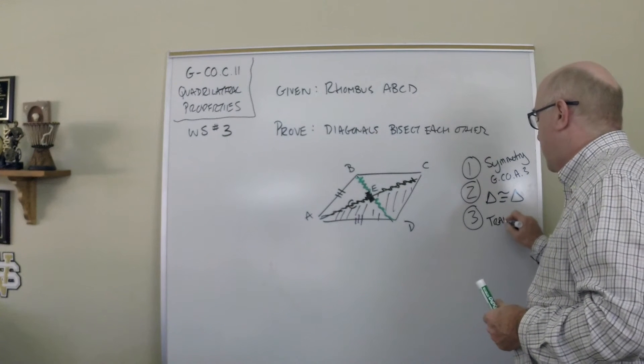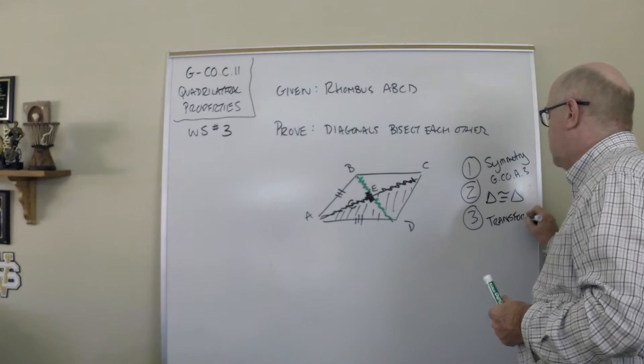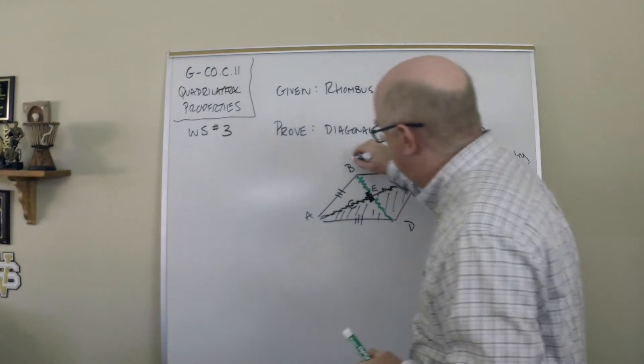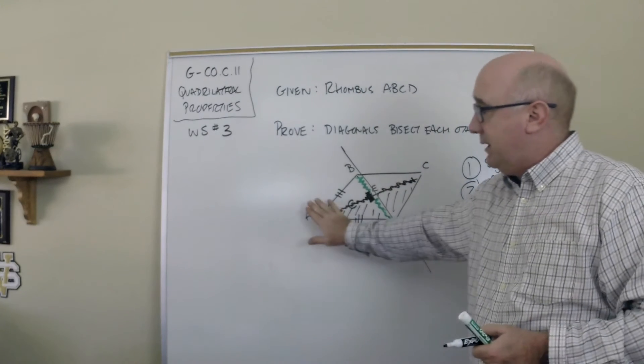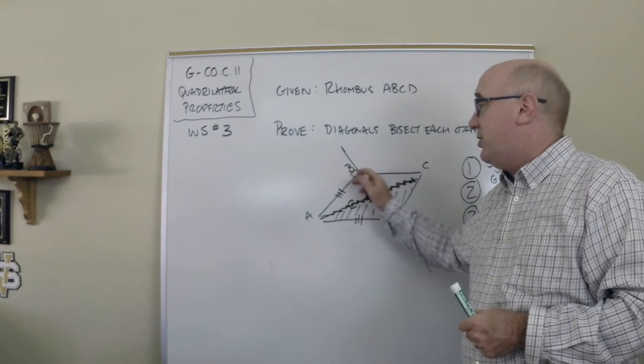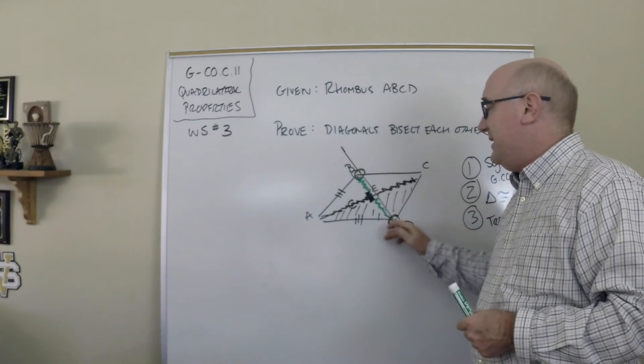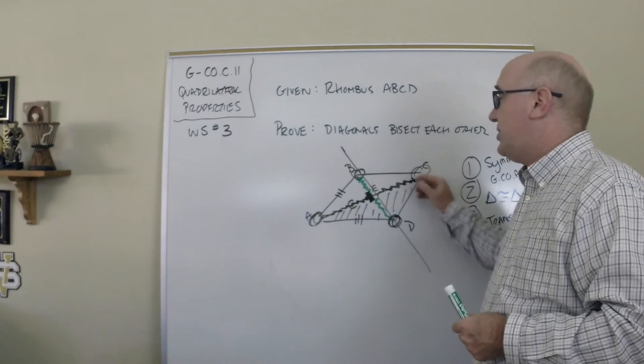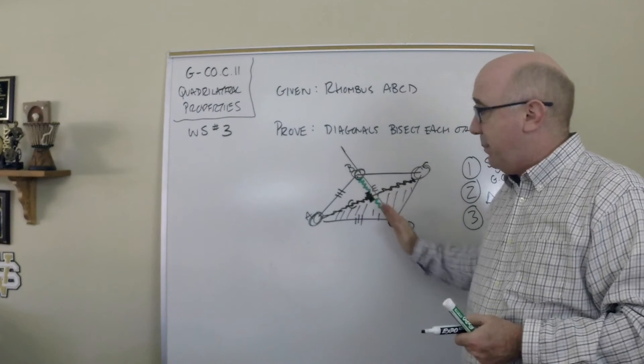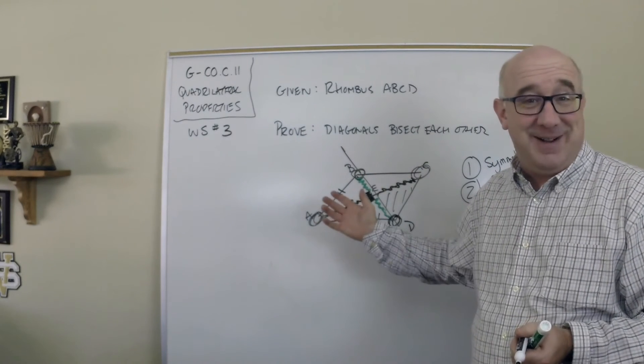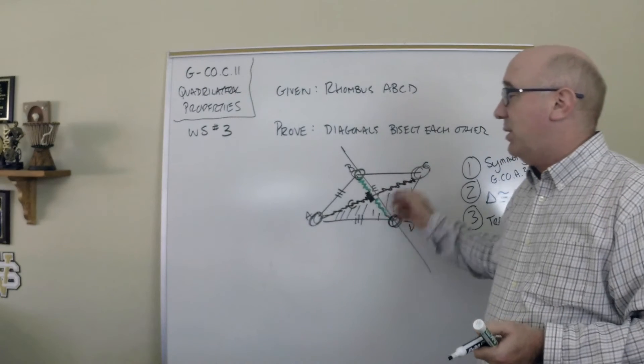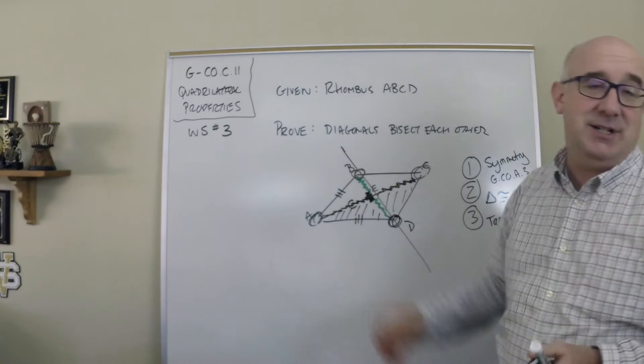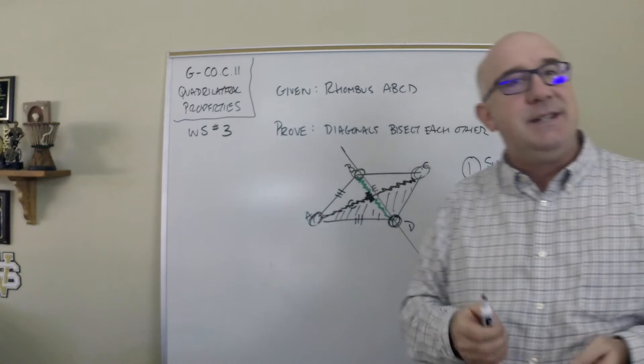Another way to do it, of course, would be a transformational way, and I think a reflection would be a great way to do this. Basically, you could talk about the mapping of B to itself, of D to itself, that A would have to map to C because this is perpendicular and in the middle, a perpendicular bisector. And that would force AE to map onto CE and BE to map onto DE.